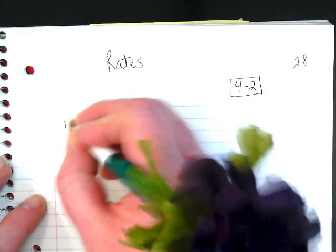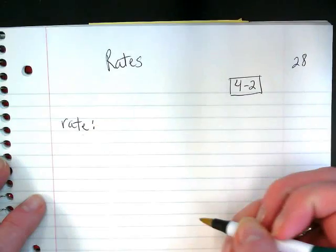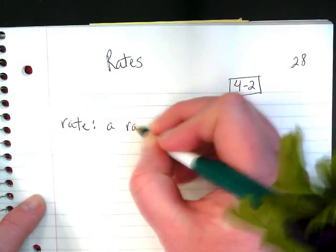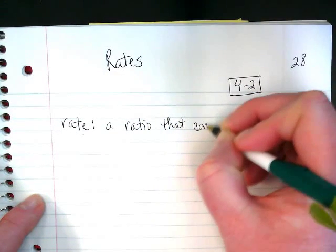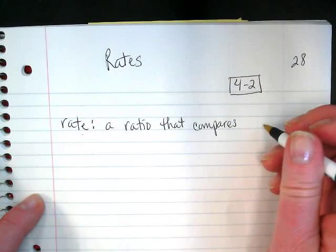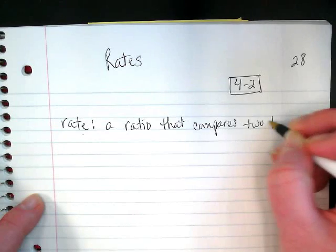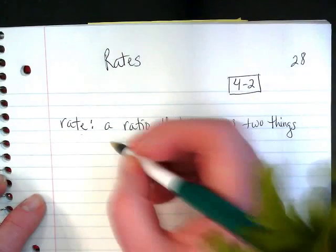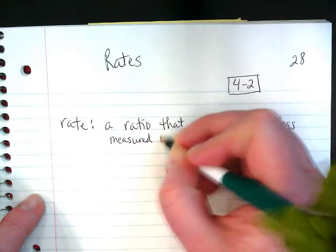So a little bit of vocabulary first. What is a rate? It is a ratio that compares two quantities, or let's just make that an easier vocabulary word. Two things measured in different units.